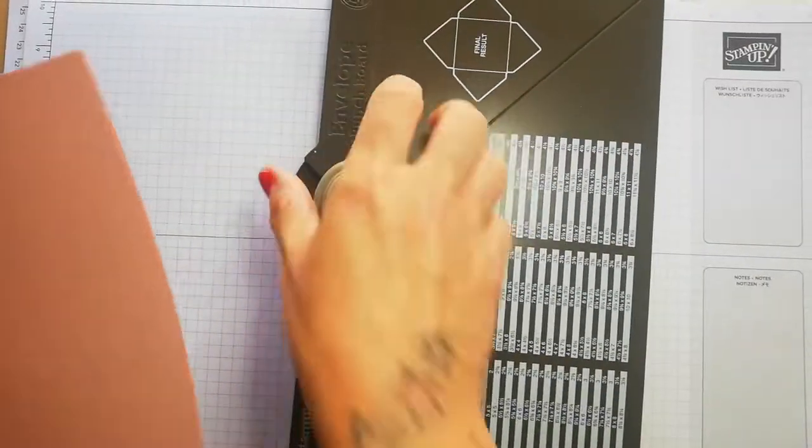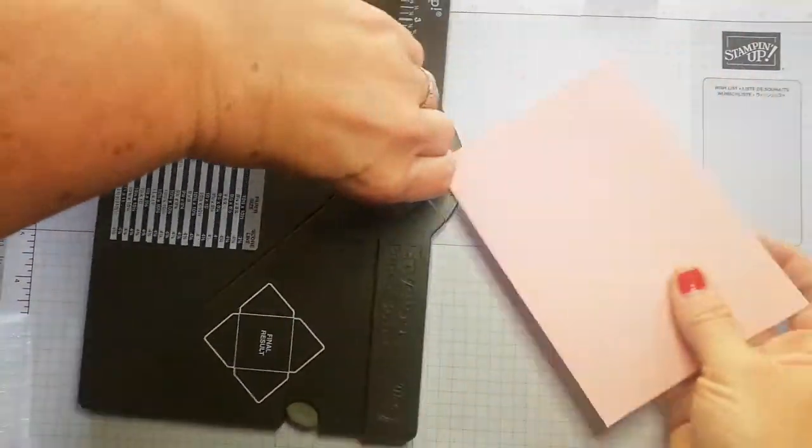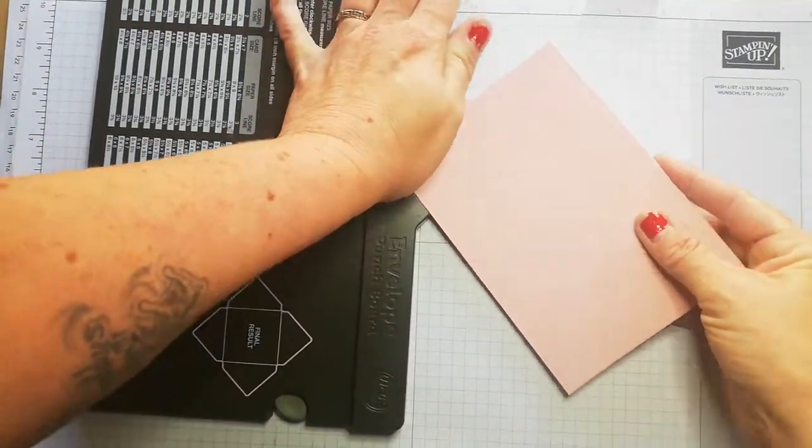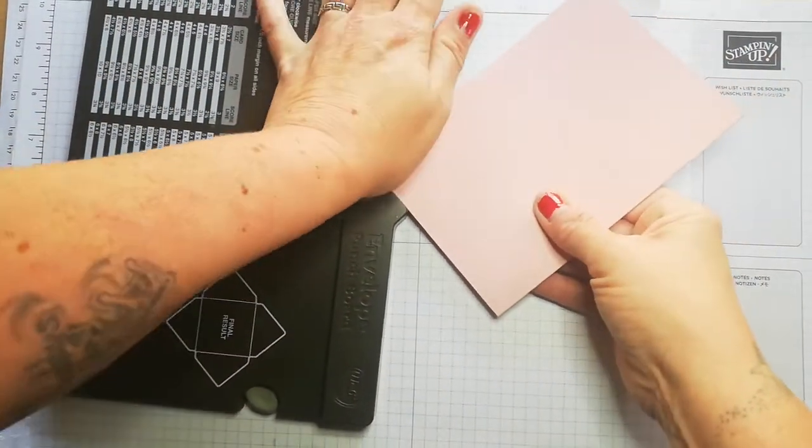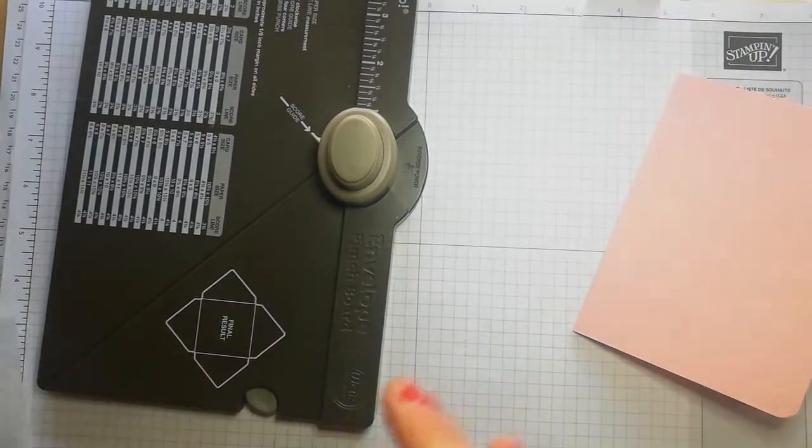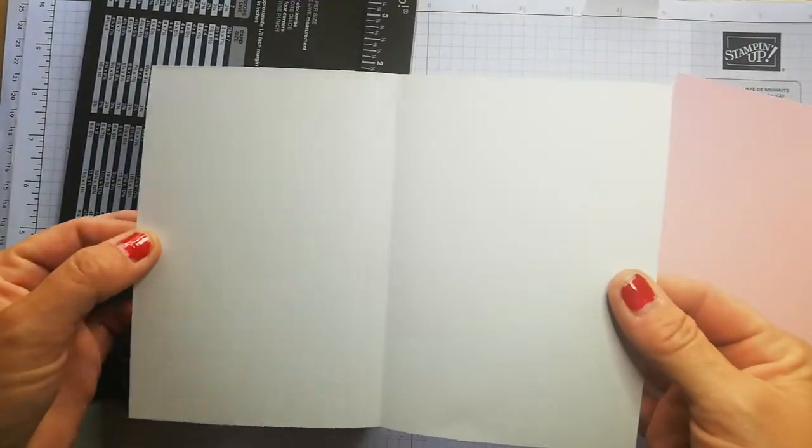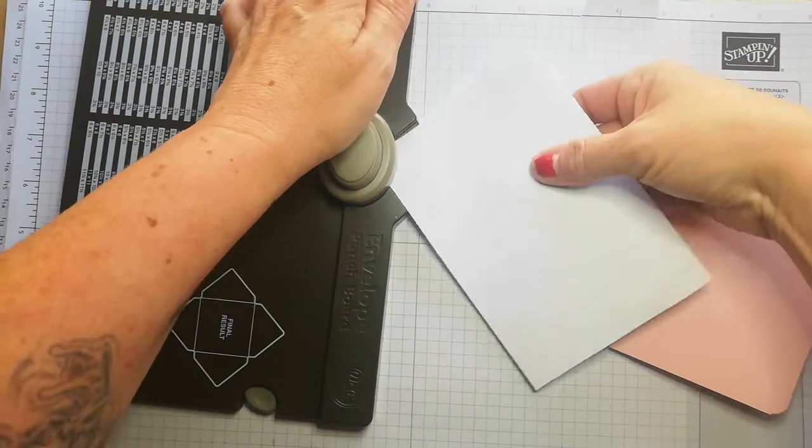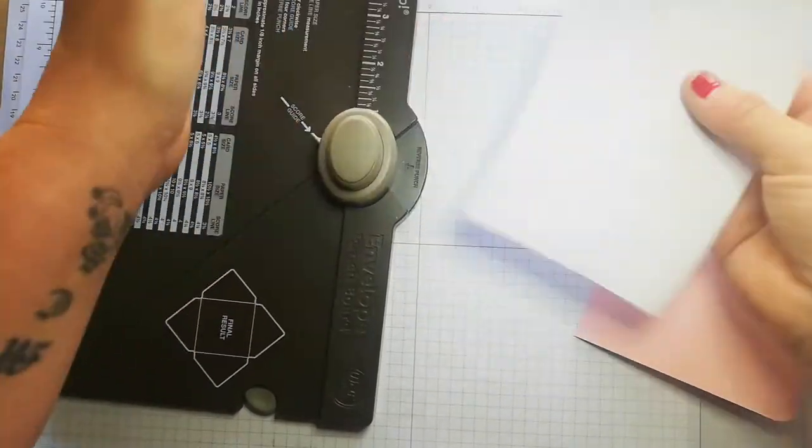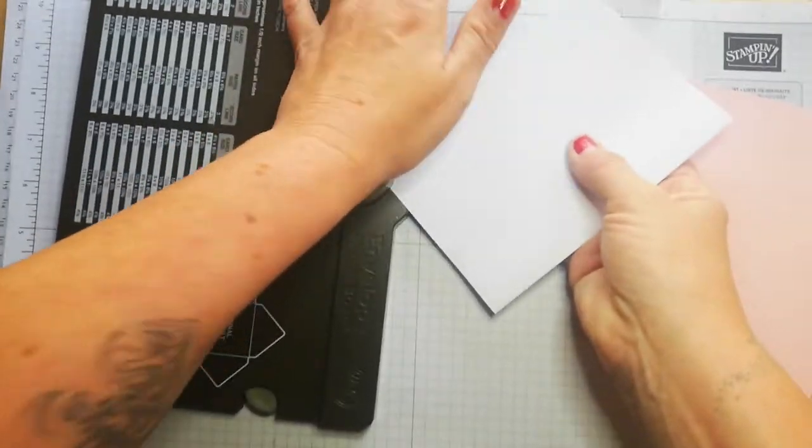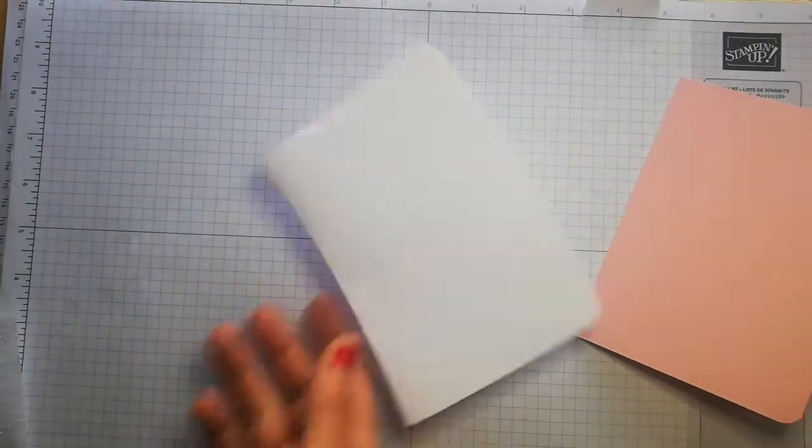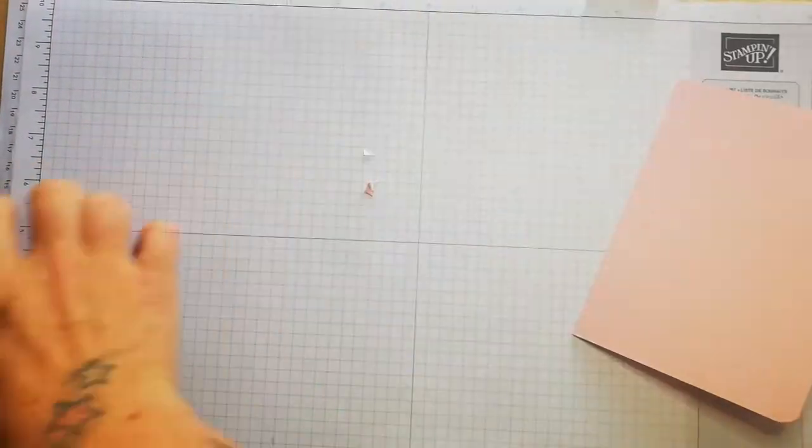So I'm going for Blushing Bride, and this measures five and seven eighths by four and one eighth. I want to round the corners on the outside of the card. I've got a piece of white copy paper for an insert because wedding cards always need an insert.